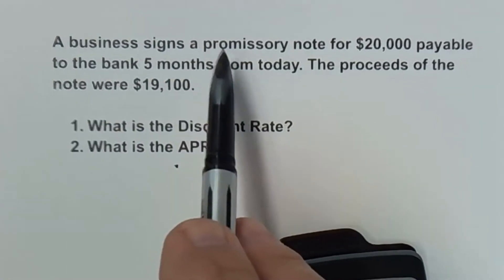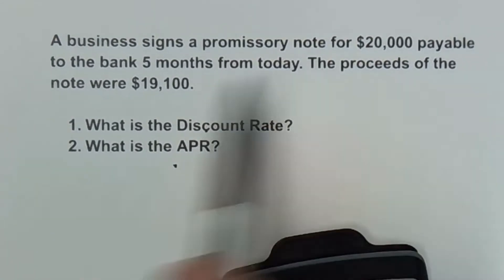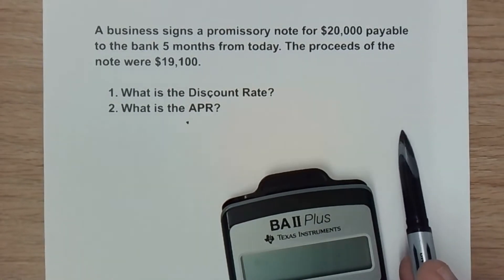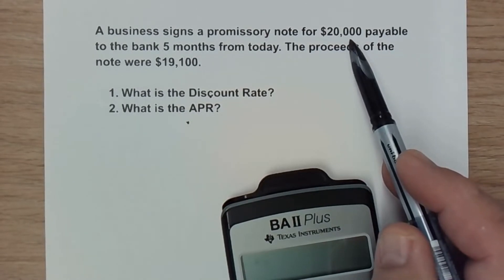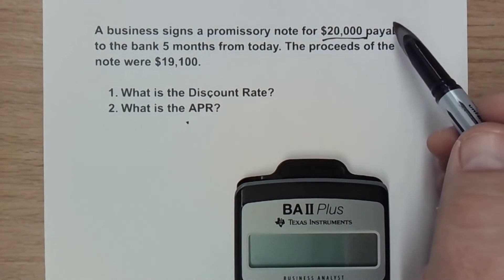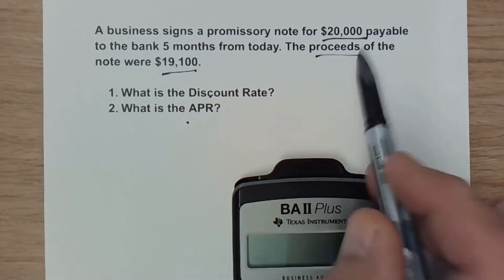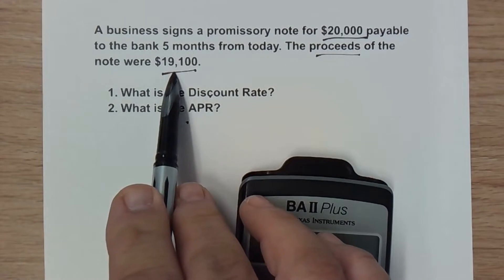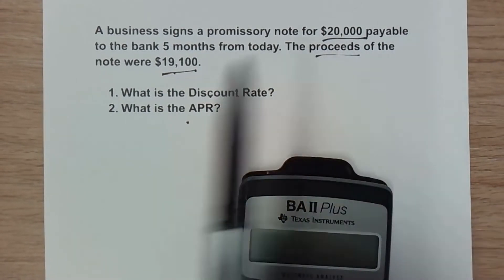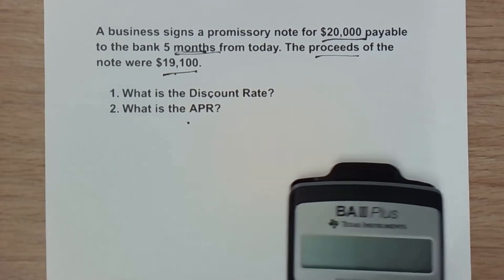Here, we've got a business that signs a promissory note for $20,000 payable to the bank five months from today. The proceeds from the note were $19,100. This is a type of prepaid interest. Instead of tacking on the interest on top of the $20,000 to be repaid in five months, the business will only repay $20,000, and so all the interest has to be front-loaded. The proceeds — how much the bank actually lends to the business — is only $19,100. So they get a check for $19,100 today, and then they have to write a check to the bank for $20,000 five months from today. That is a discount note.